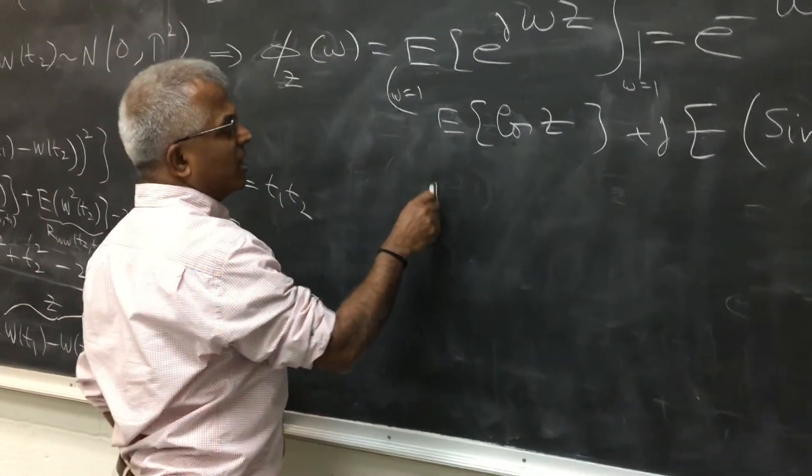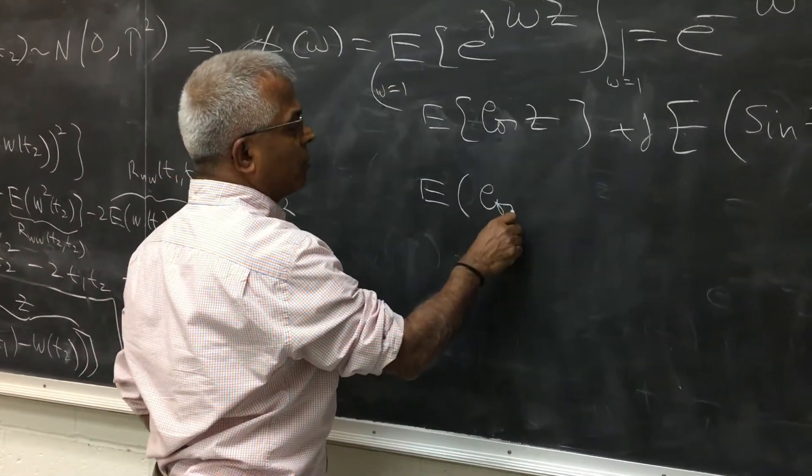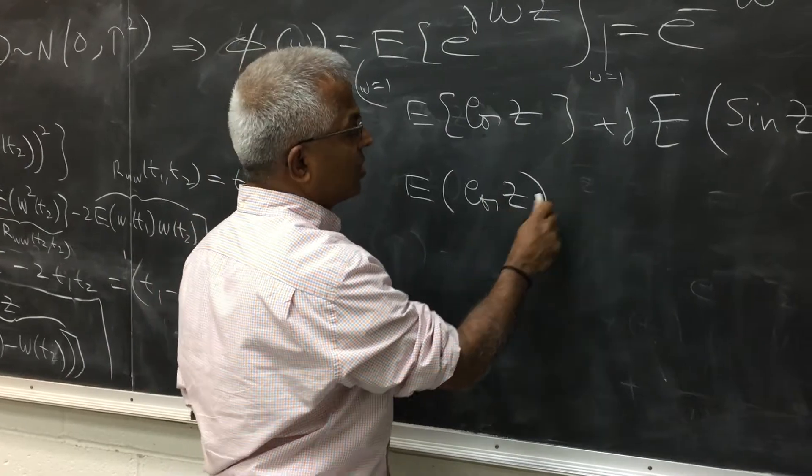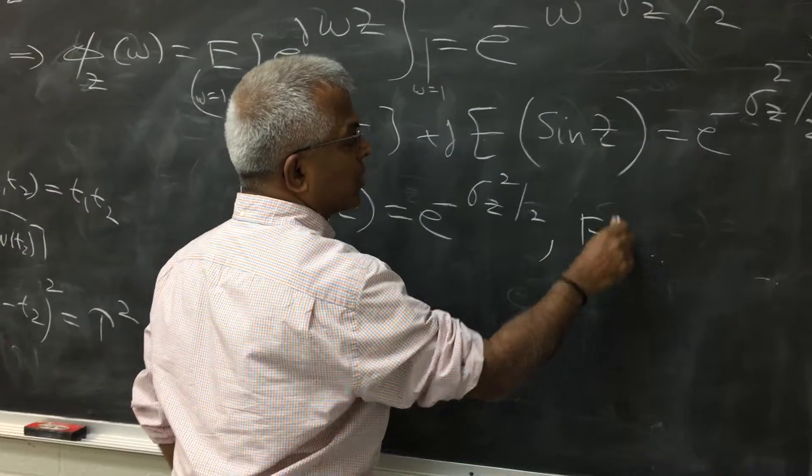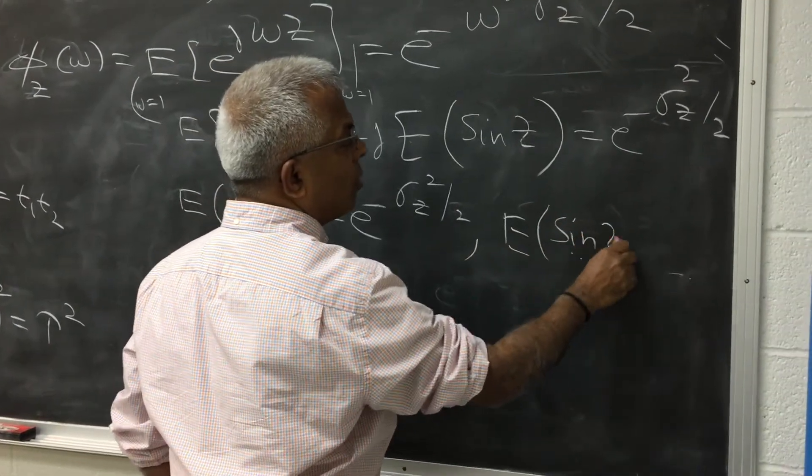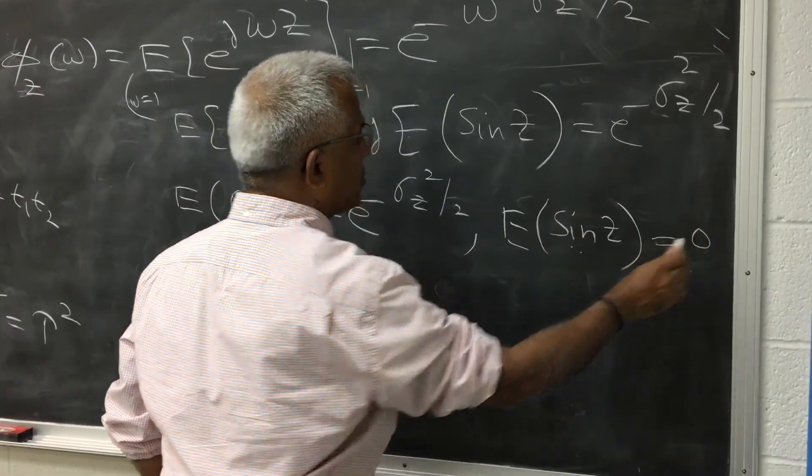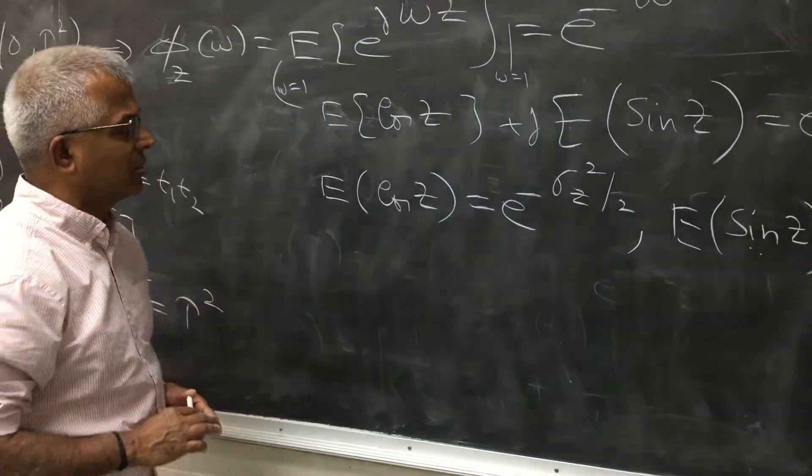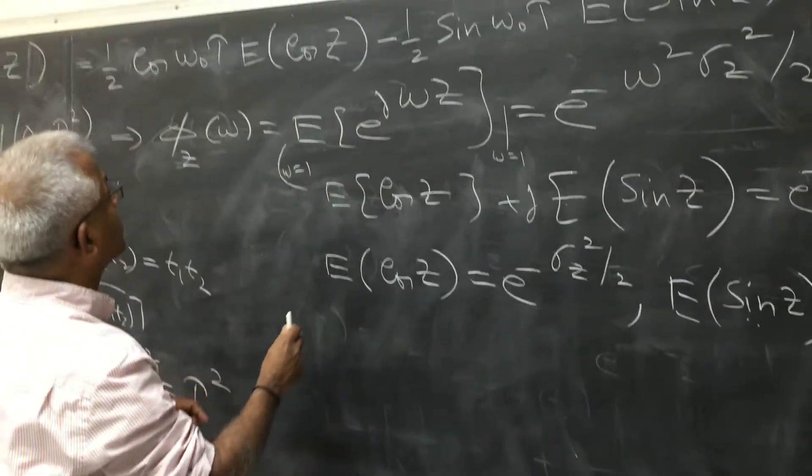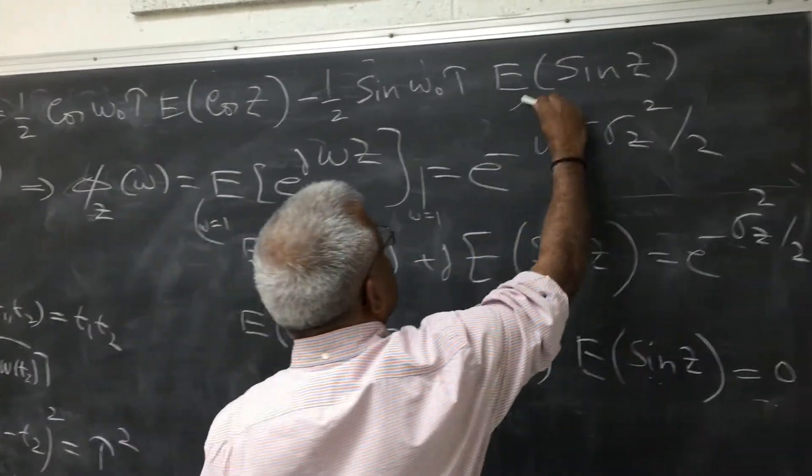So we get, this is a standard expression, expected value of cos z when z is a Gaussian random variable is e raised to minus sigma z squared by 2. And expected value of sine z, which are all the odd order moments, are anyway 0. But we can see it from here also, there is no imaginary part on the right side. So we can plug this expression here. So this goes to 0.